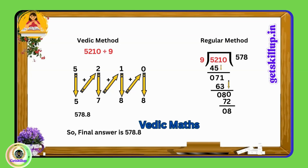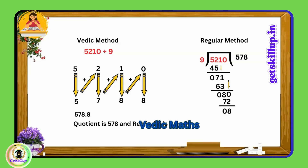This method significantly simplifies the division process. With a little practice, you will be able to perform these calculations swiftly. You can also verify using the normal method and you will get the same result. For instance, if you divide 5210 by nine using the normal method, you will obtain the same result. Now let's consider another example.